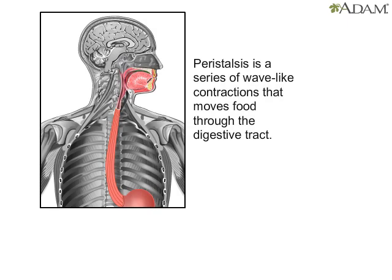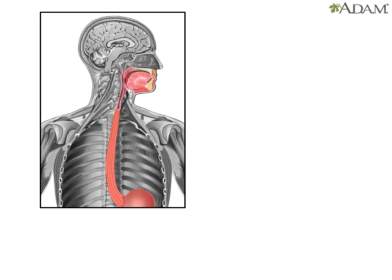Peristalsis is a series of wave-like muscle contractions that move food through the digestive tract. It starts in the esophagus, where strong wave-like motions of the smooth muscle move balls of swallowed food to the stomach.